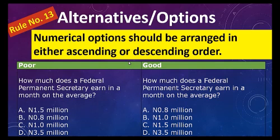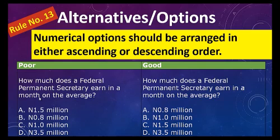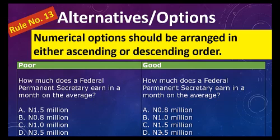Rule number thirteen: numerical options should be arranged in either ascending or descending order. For example, 'How much does a federal permanent secretary earn per month?' — options should not jump from 1.5 to 0.8 to 1.0 to 3.5 randomly. The better arrangement is in ascending order: 0.8 million, 1.5 million, 1.8 million, 3.5 million naira — not in a random manner.